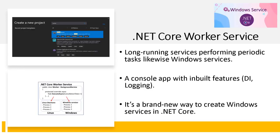Now let's look at .NET Core Worker Services. Worker Services are generally long-running services performing periodic tasks. They do not have user interfaces or support direct user interaction, similar to Windows Services. Worker Services are basically console applications, but they bring built-in features such as dependency injection and logging, configurable using the same ASP.NET Core extensions that turn a console application into something more powerful. In a nutshell, it's a brand new way to create Windows services in .NET Core, but with much more capability in terms of cross-platform and cloud hosting.